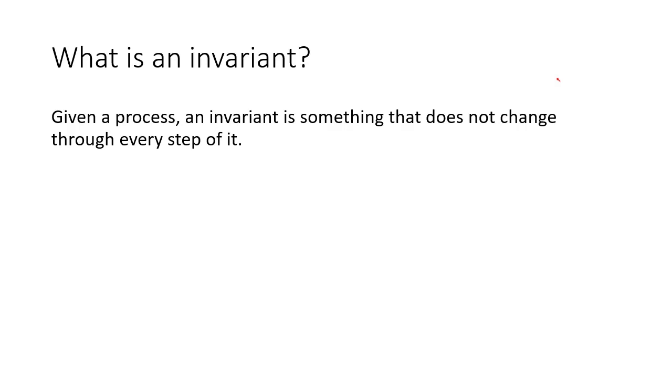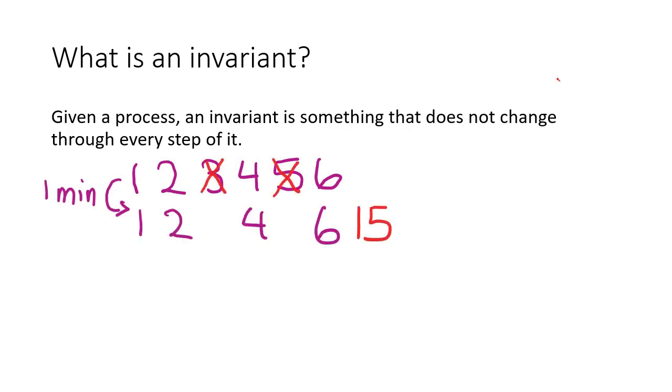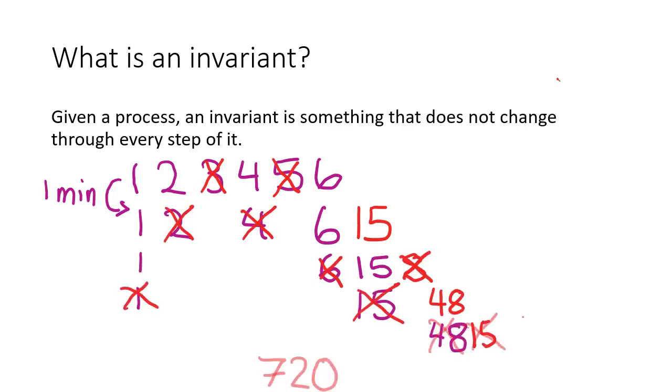Suppose we start with the numbers 1 through 6 on a chalkboard, and then begin a process such that, every minute, we erase two numbers and replace them with their product, until there's only one number left. Then, an example of an invariant in this process would be the total product of all the numbers on the chalkboard.